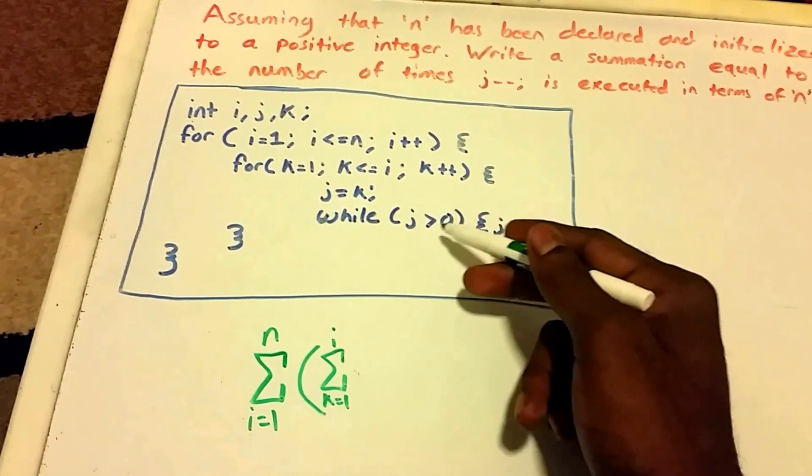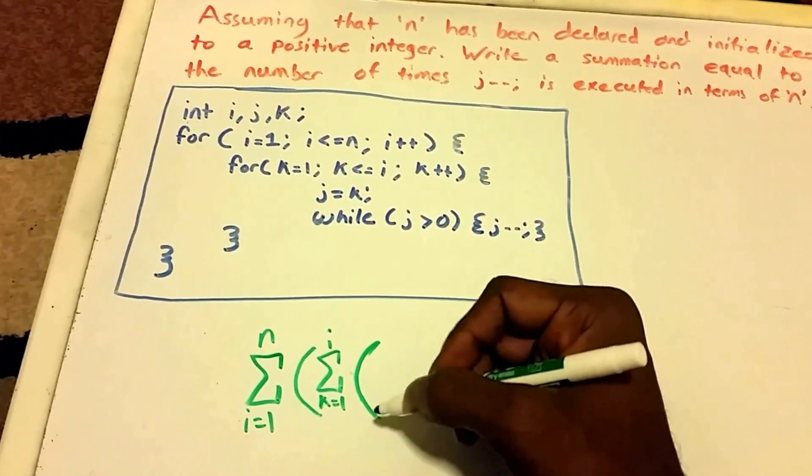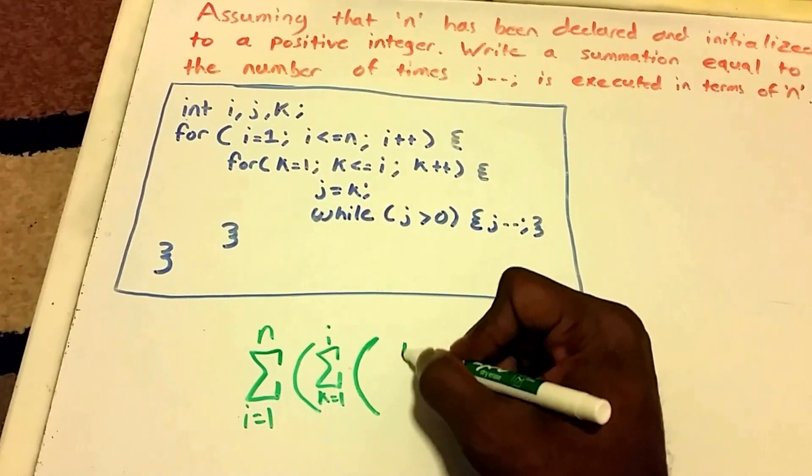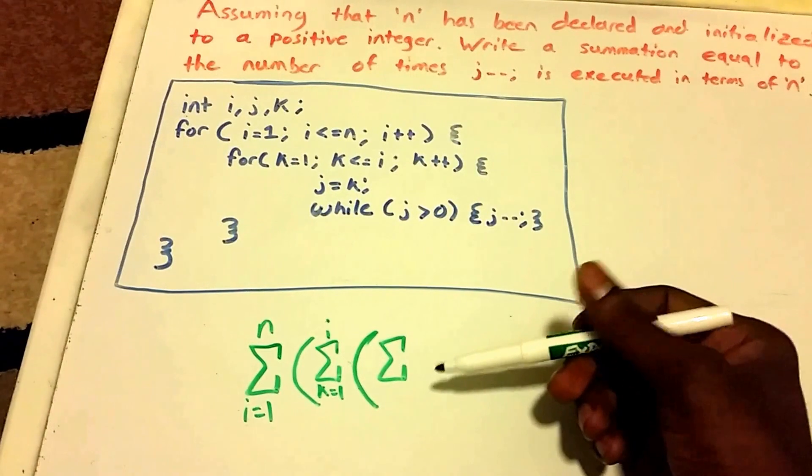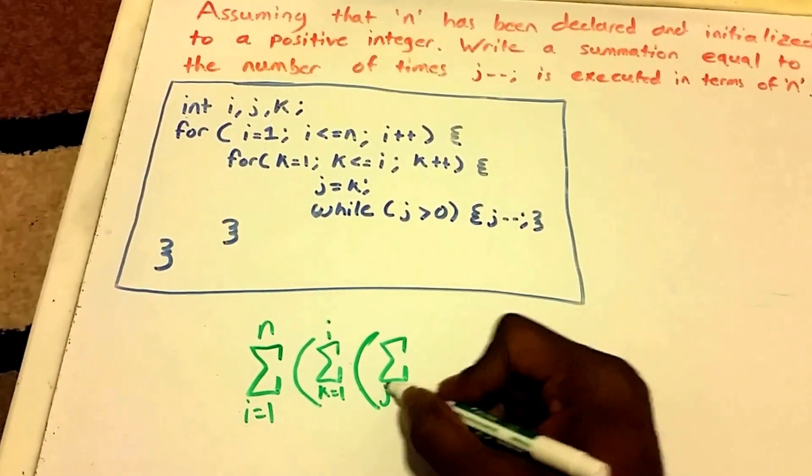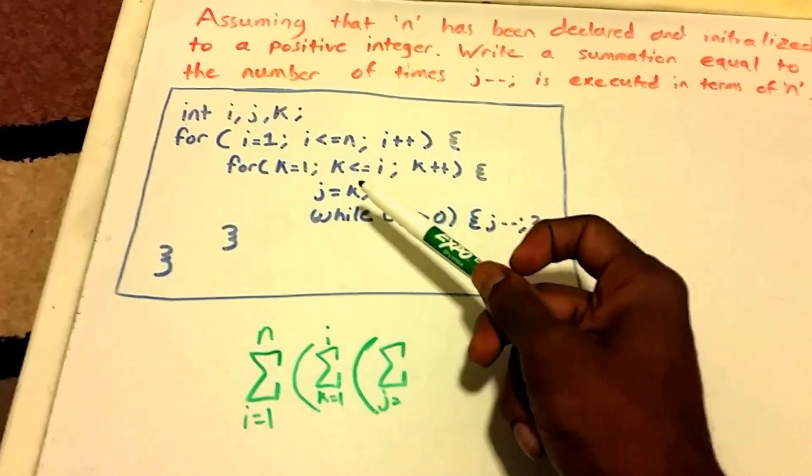And within that loop, we have our while loop. OK, now this is a little bit trickier, so we want to write a summation for our while loop. Our while loop runs from j equal to, well, let's see, j equals k here.